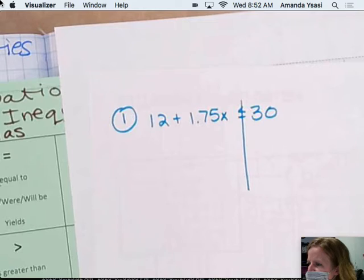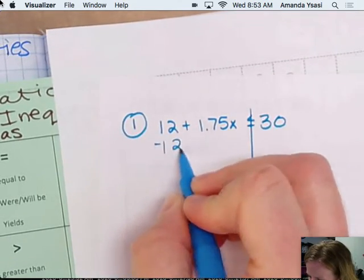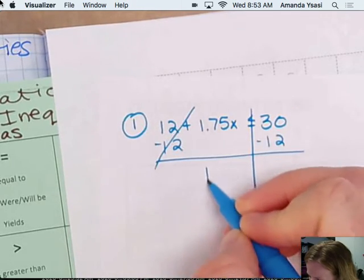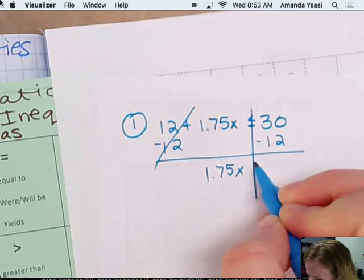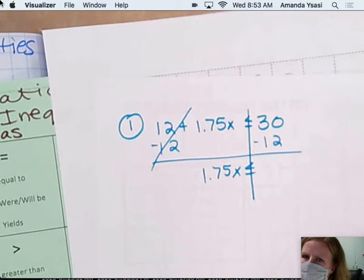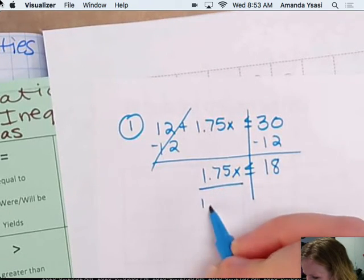So we need to solve this. So we need to get rid of the $12. So minus $12. $1.75X is less than or equal to, $30 minus $12 is $18.